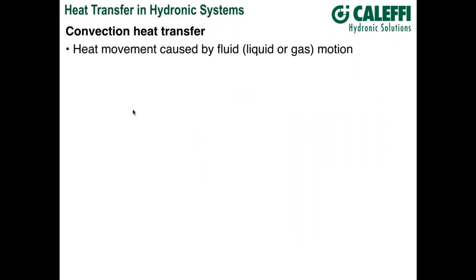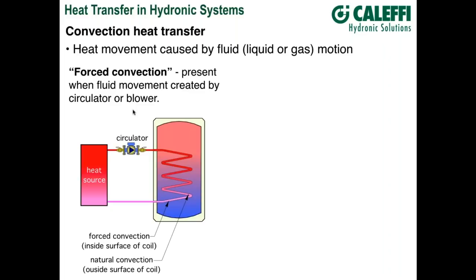Let's move to convection. Convection is heat transfer caused by the movement of a fluid — and fluid here can mean a liquid like water or a gas like air. There are a couple of categories. Forced convection is when you have a mechanical device — a circulator or a blower — forcing the fluid to move, producing higher flow velocities. The faster that fluid moves across a surface, the better the heat transfer rate.